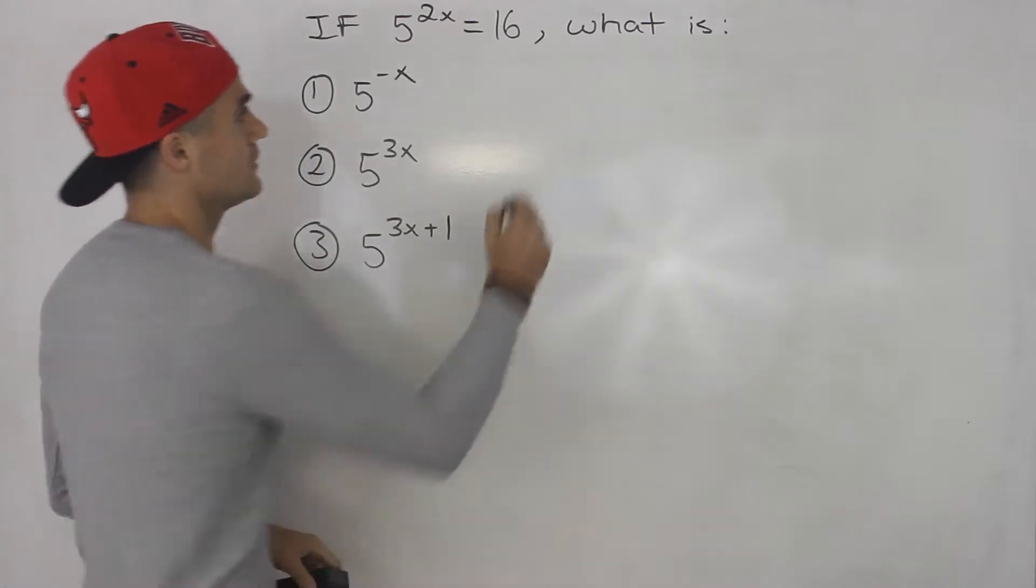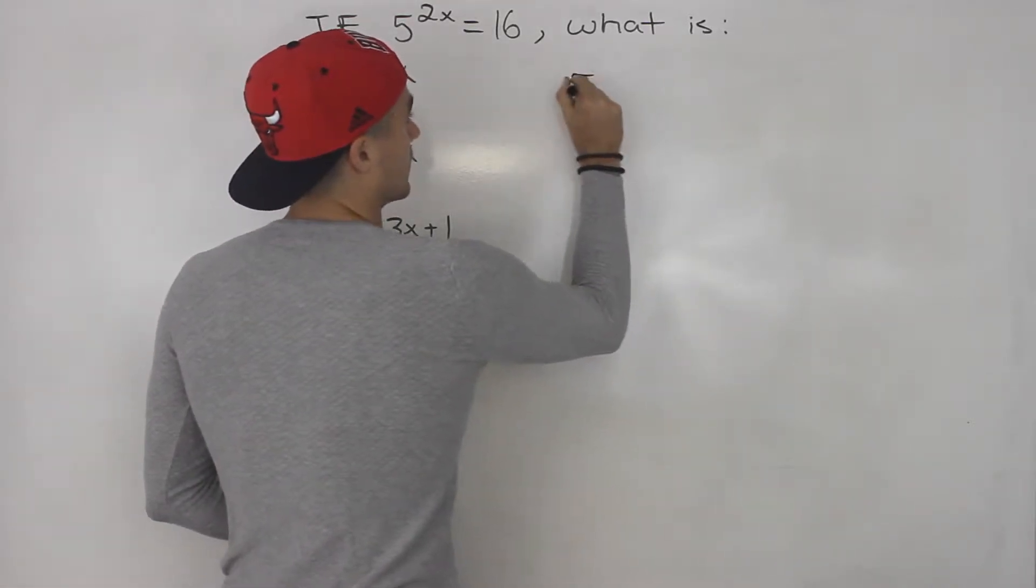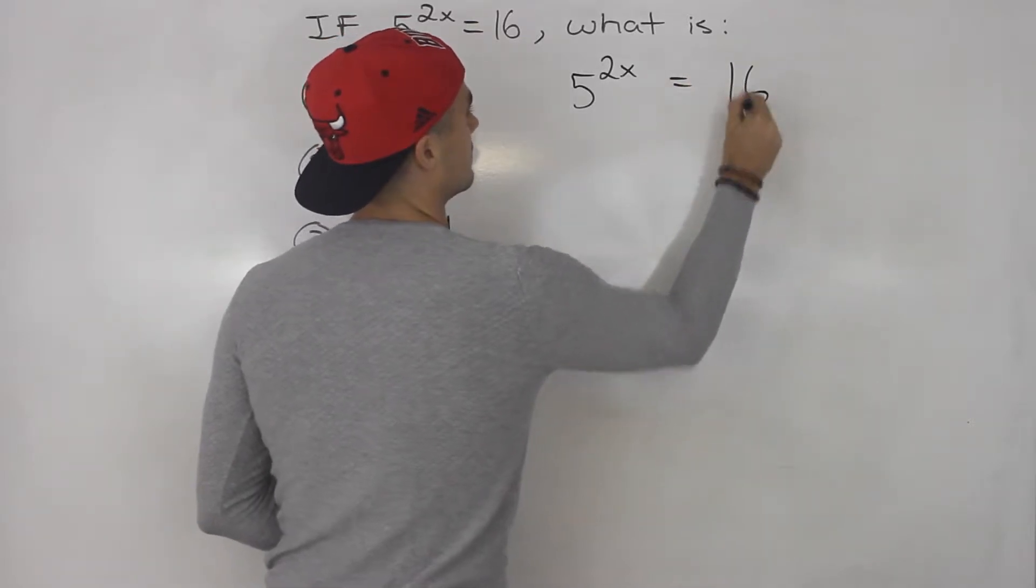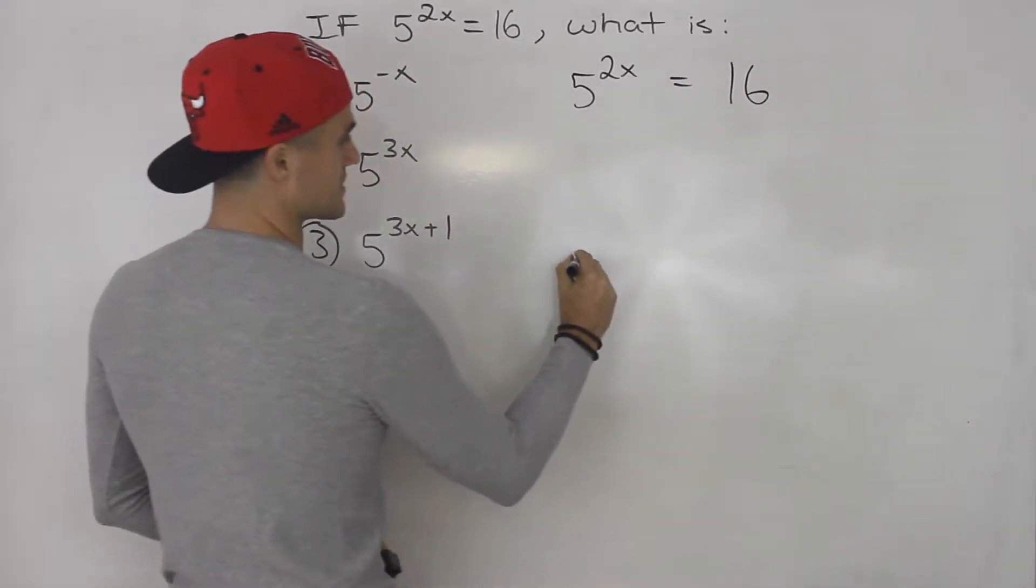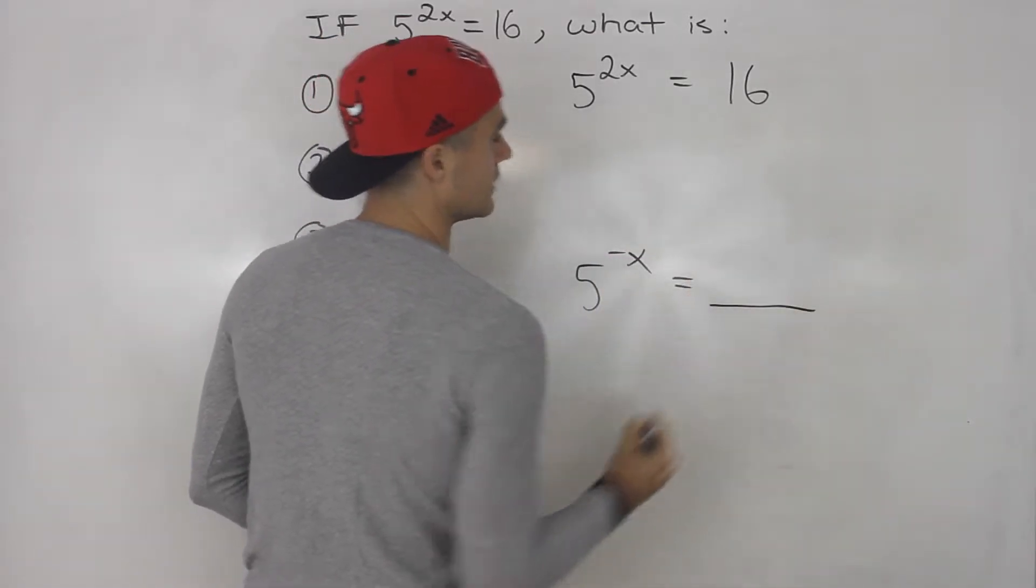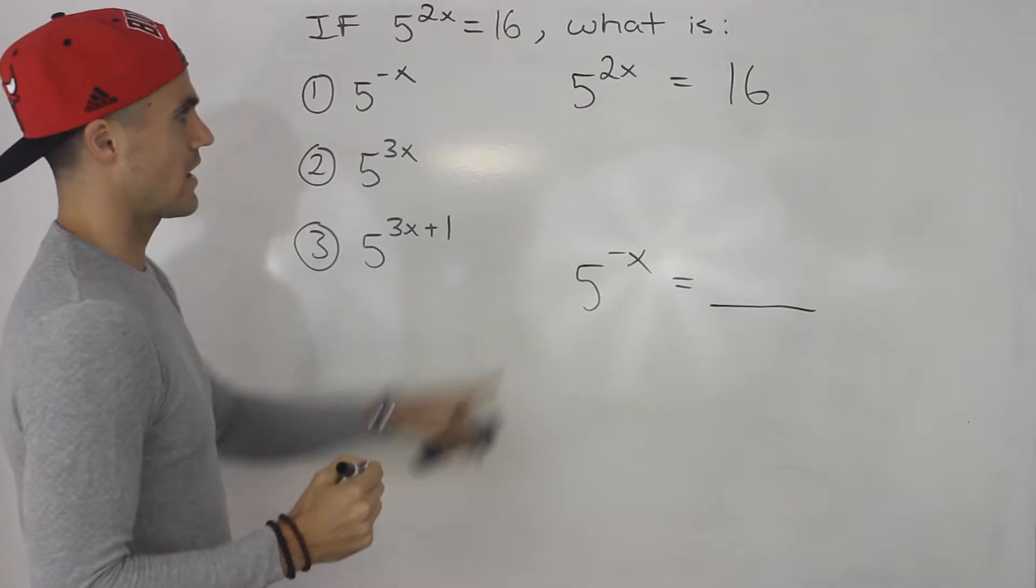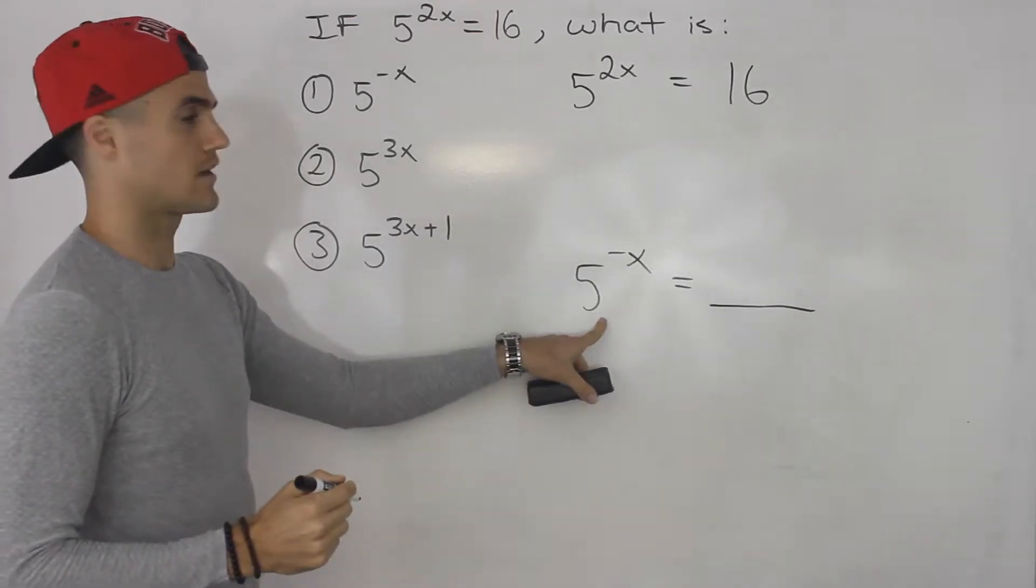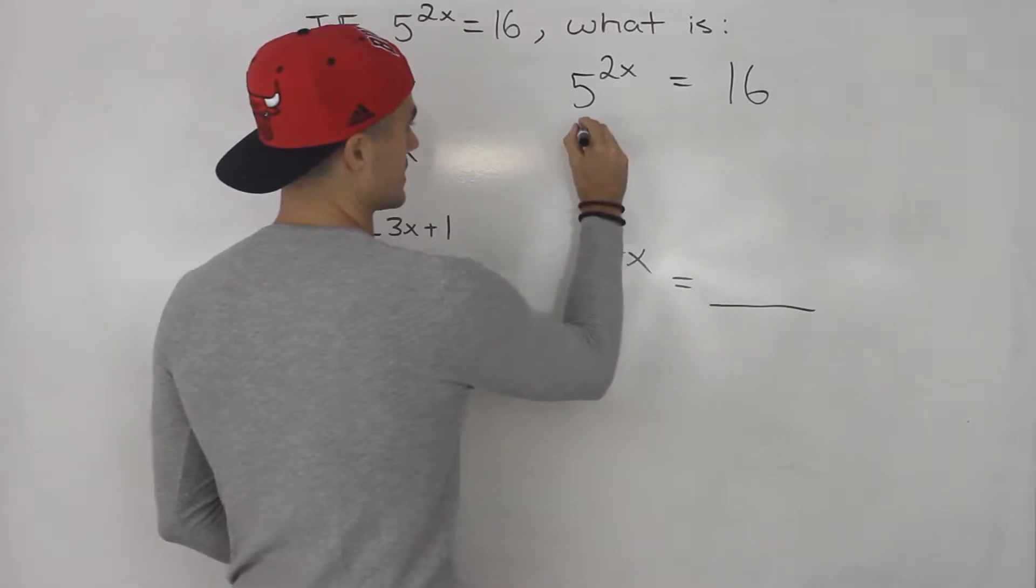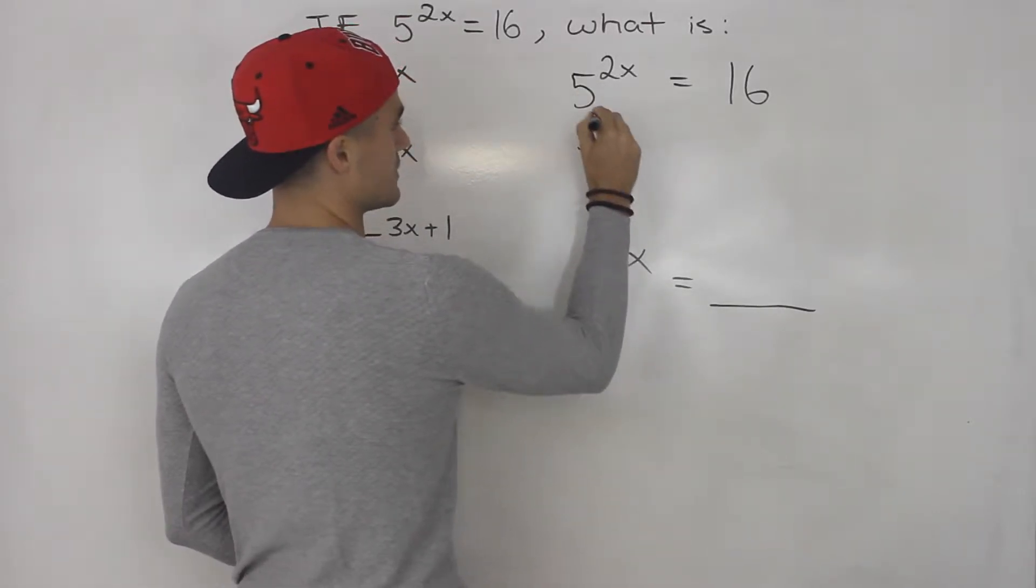Starting off with number one, we're given this, right? And we have to somehow get to this here, and we have to figure out what that is going to equal. So how can we get from here to here? Well, first thing I would suggest is we split this up here.